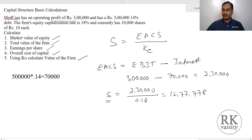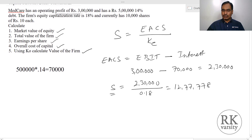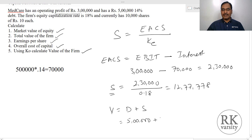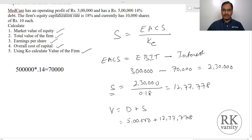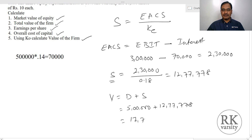Then the total value of the firm, indicated as V, equals D plus S — that is the value of debt plus the value of equity. Here the market value of debt is not given, so we consider the book value of debt. So this is 5 lakhs plus 12 lakhs 77,778, which comes to 17 lakhs 77,778.